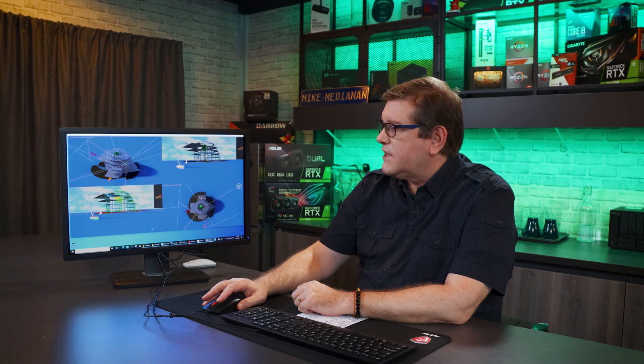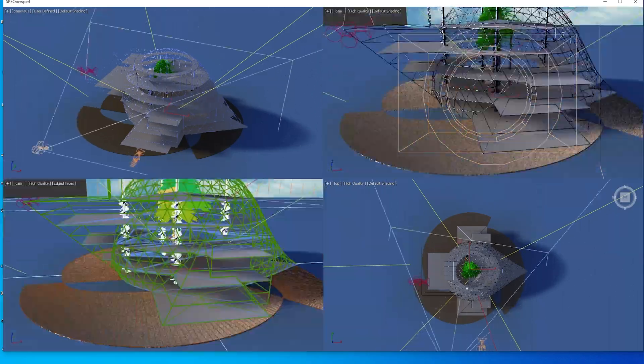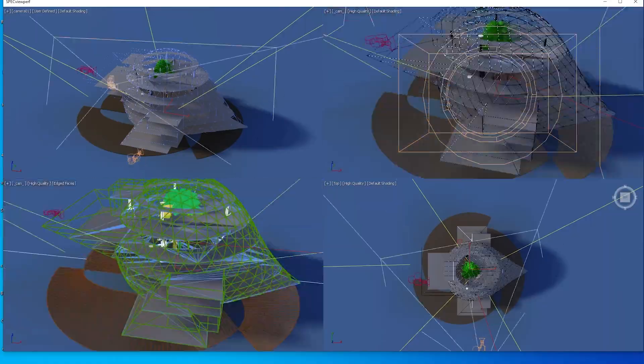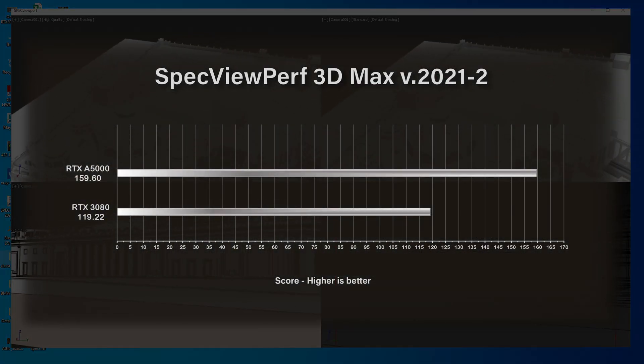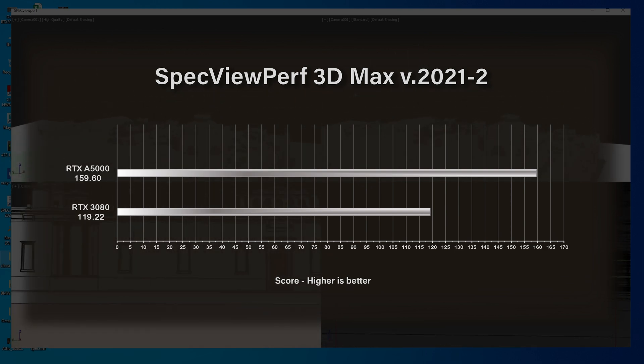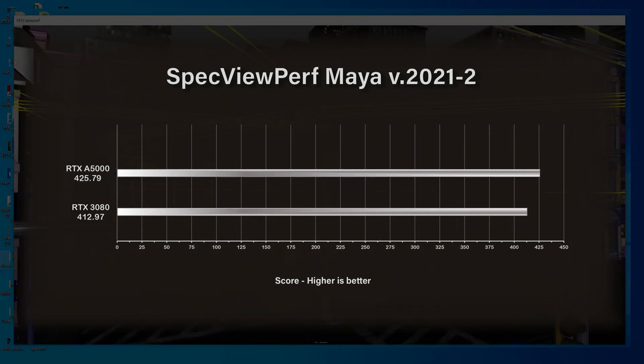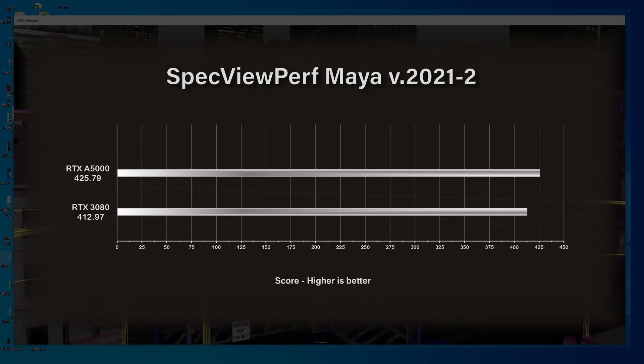SPECviewperf runs animated camera viewport interactions across various scenes and takes quite a while to complete. For 3ds Max, the RTX 3080 scored 119.22 while the A5000 scored a notably better 159.60. In Maya, scores were closer: 412.97 for the 3080 versus 425.79 for the A5000. You can also visit the SPECviewperf website to compare your results against other systems and GPUs — it's a great full-system benchmarking tool.